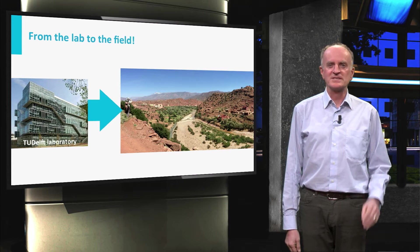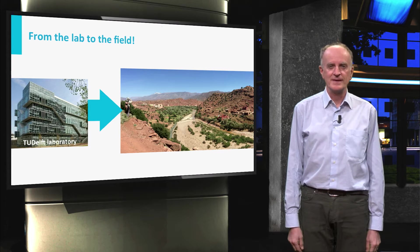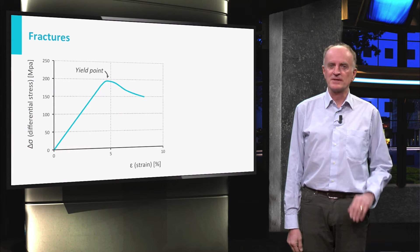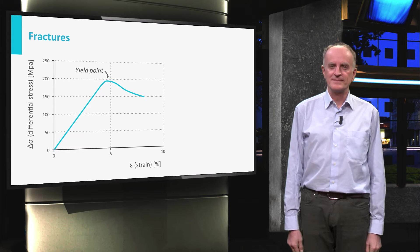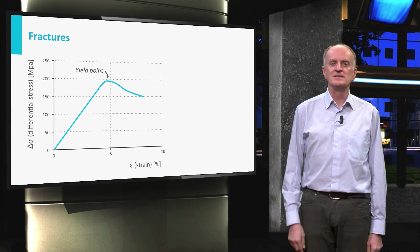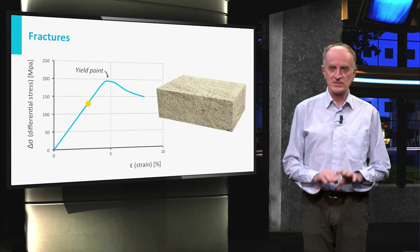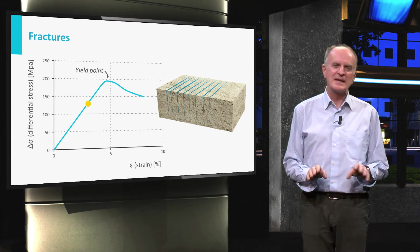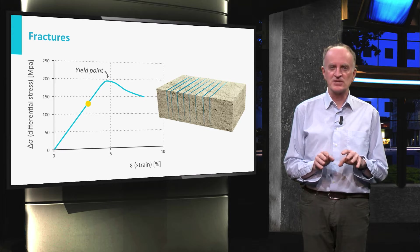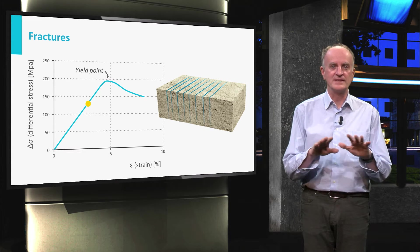We will focus on structures developed in the low temperature regime. Remember the stress-strain curve we discussed during the first clip? Looking at deformation structures, we distinguish two stages. In the first stage, deformation is low, typically less than 5-10%, and fractures progressively form distributed over the entire rock.